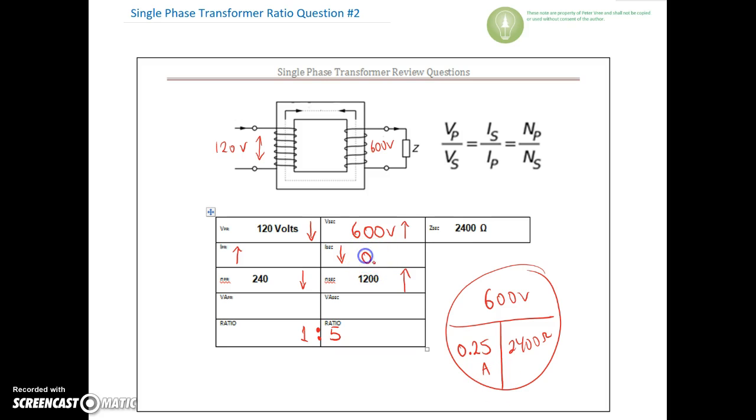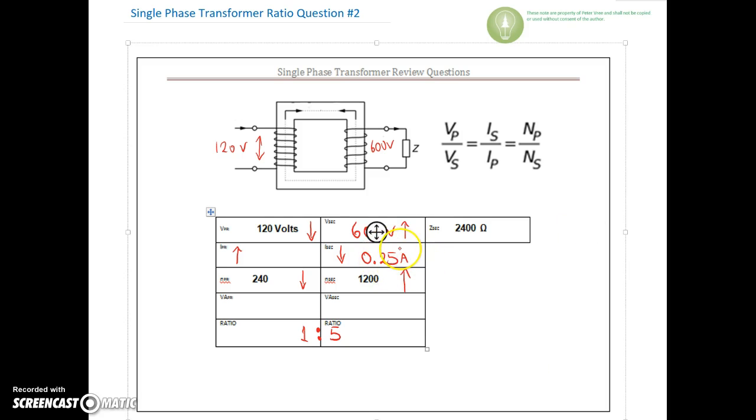Okay, so we've got 0.25 amps on the secondary, right? That's the lower current. Now we need to find out what our primary current is. So take a look, make sure everything's cool before we move on. Now if we look at the primary current, the primary current is going to be higher, and it's going to be higher by that same ratio. So it's going to be 5 times higher. So 5 times our secondary current of 0.25 gives us 1.25 amps on the primary.